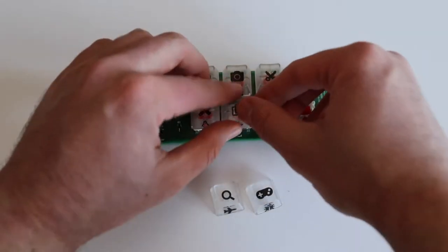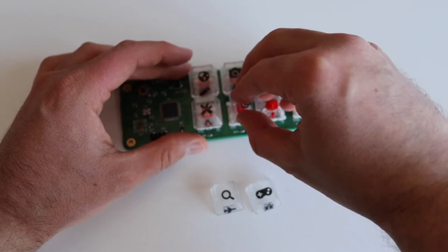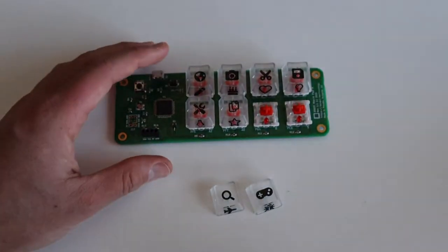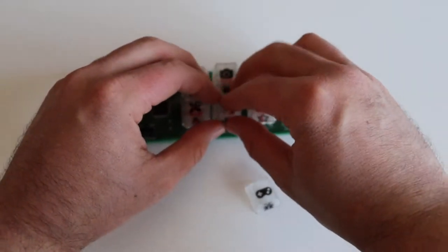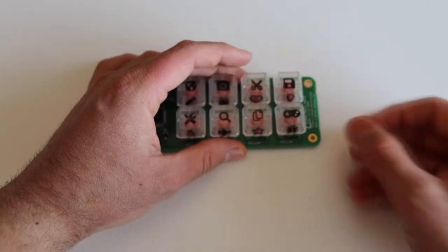As you can see in the video, a keycap puller might be useful if you make a mistake and want to pull off a keycap and place it on another location. Of course, you can do the same with your bare hands but with a keycap puller it's easier.